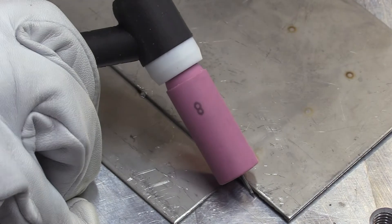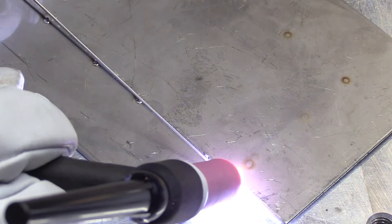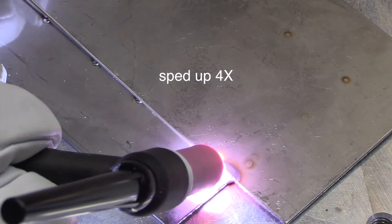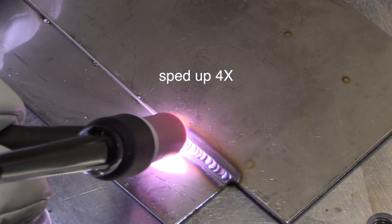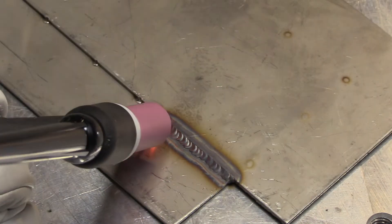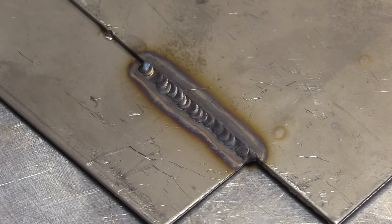This is a standard number eight cup standard collet body that comes with most air-cooled 17 style torches. The most common torch out there that comes with say a 200 amp machine. This is sped up four times but I'm just showing you with a 7/16 stick out at 20 CFH results are less than perfect.